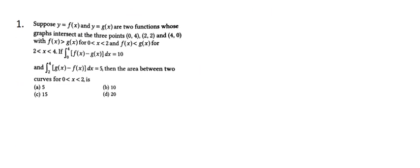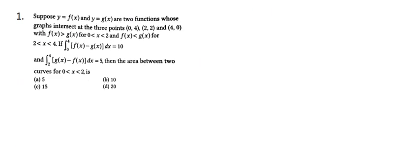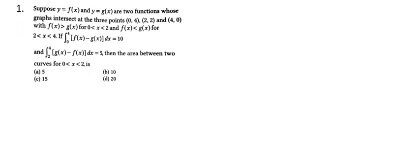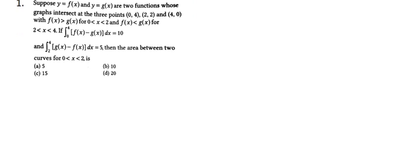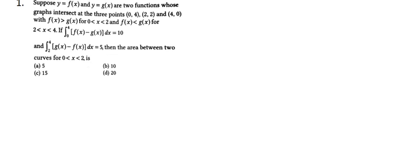Our first sum says: suppose y = f(x) and y = g(x) are two functions whose graphs intersect at three points (0,4), (2,2), and (4,0), with f(x) greater than g(x) for x in 0 to 2, and f(x) less than g(x) for x in 2 to 4.